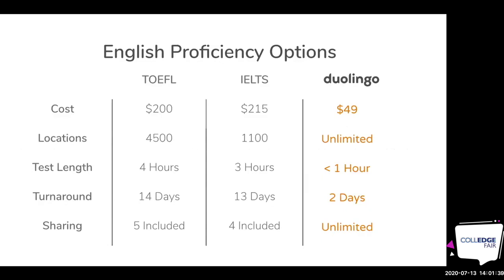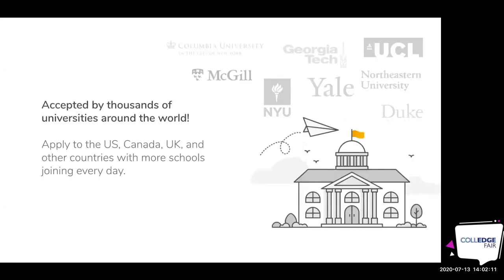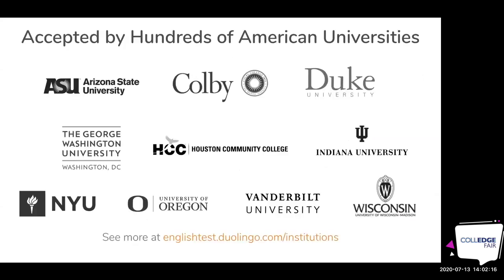Here's how we compare to the TOEFL and the IELTS. Much more affordable, of course, at unlimited locations. We have students taking it at all hours of the day around the world. It's around an hour. You'll receive your results in around two days, and you can share it with unlimited universities. You can apply to schools in the US, Canada, UK, Hong Kong, and other countries. We have over 1,000 universities accepting the test, from places like Arizona State and NYU to community colleges, public colleges, and liberal arts schools.